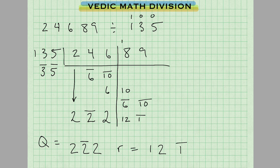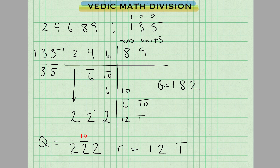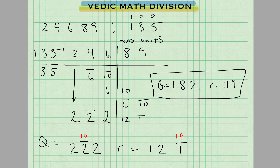Remember that the first digit here is your tens place and the second is your units place. To get the final answer, we need to remove the bar numbers using all from 9, last from 10. When you have a single digit bar number, it's last from 10. So subtract 1 from 2, giving 1, then 10 minus 2 is 8, giving quotient 182. For the remainder, subtract 1, making it 10 minus 1 is 9, giving remainder 119. Final answer: quotient 182, remainder 119.